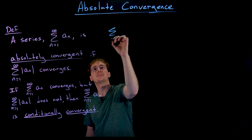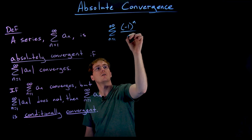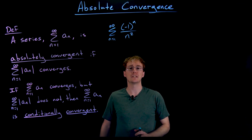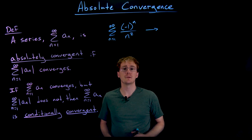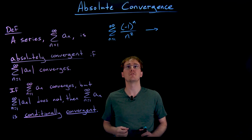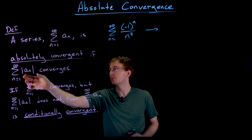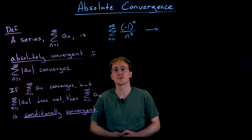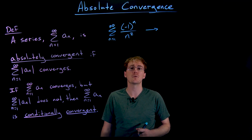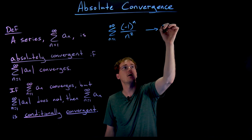We have already come across some examples. The series — the sum from n equals 1 to infinity of negative 1 to the n over n squared — is an example of an absolutely convergent series. If our starting series is the sum from n equals 1 to infinity of negative 1 to the n over n squared, then to test for absolute convergence we take the absolute value of each term. The absolute value of negative 1 to the n over n squared is just 1 over n squared, since that numerator is always switching between negative 1 and positive 1.